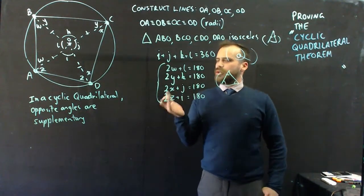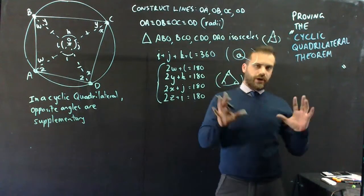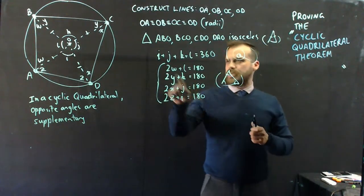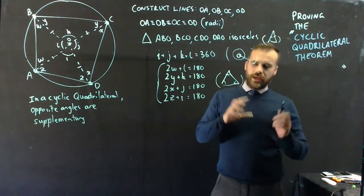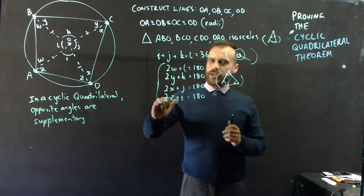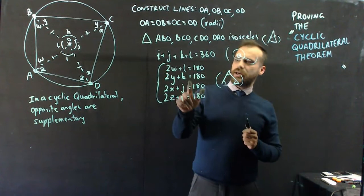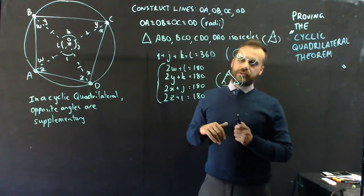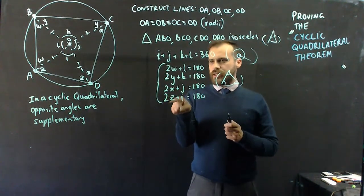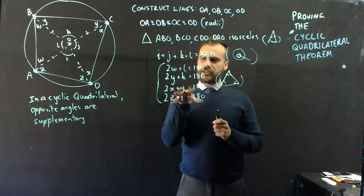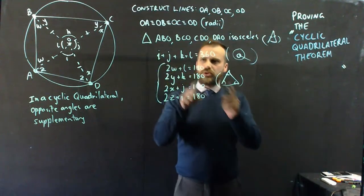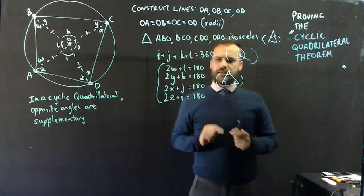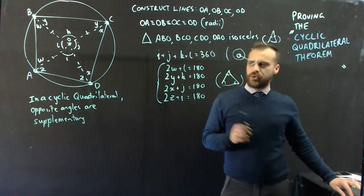Now, where can we go to from here? All right, eureka, I see it. I see an equation here with I, J, K, and L is equal to 360. And I see four other equations where I, J, K, and L each make an appearance. So I could rearrange these equations all to make I the subject. And then I could substitute those equations into that equation. So a little bit of movie magic.